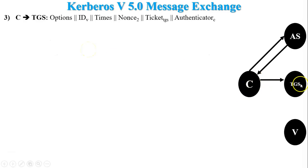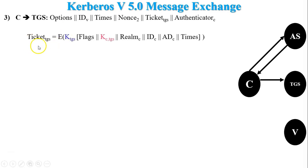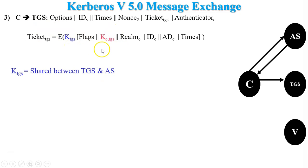In the third step, the client sends a request to the ticket granting server. In that request message there are six values, of which options, times, and nonce have already been discussed. The second value is IDV, which indicates the identity of server V. The client sends the server's identity to the ticket granting server because the client wants a ticket for server V to access its services. Another field is Ticket-TGS, which is encrypted using the KTGS key shared between the authentication server and the ticket granting server. The ticket granting server decrypts that ticket and gets the session key KC-TGS, shared between the client and the ticket granting server. The remaining fields of the ticket are stored in the ticket granting server.